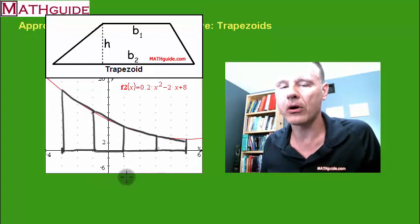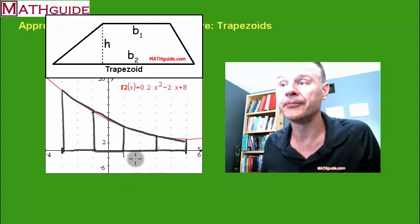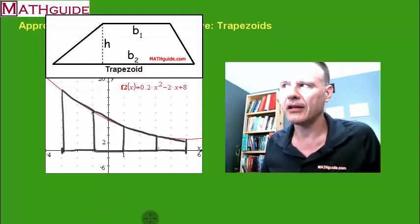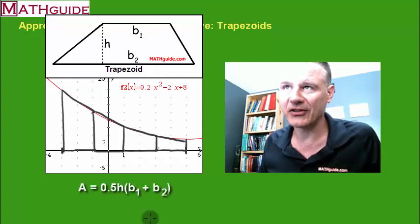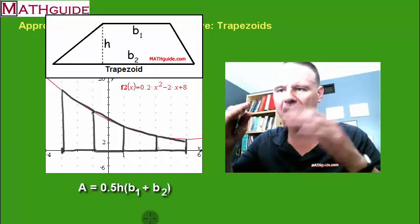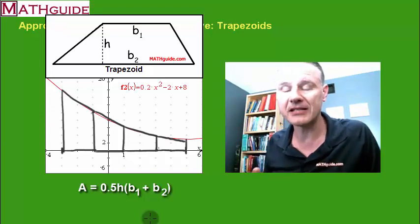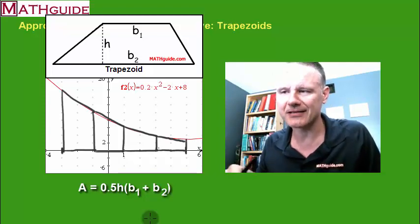If I could figure out what's the area of these four trapezoids, find their sum, I'll have a pretty darn good approximation for the area under the curve. So how do I do it? Well, first of all, you have to know what is the area of a trapezoid. So the area of the trapezoid is one half the distance between the two bases, which is usually called the height times the sum of the two bases.